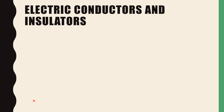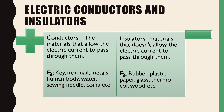Electric conductors and insulators. What are conductors? Materials that allow electric current to pass through them are called conductors. Examples include a key, iron nail, metals, human body, water, sewing needle, and coins. You can make a simple circuit and in place of the switch, use these conductors to see whether the bulb glows. You can use a key, iron nail, metal, needle, or coins — but don't use the human body, of course.